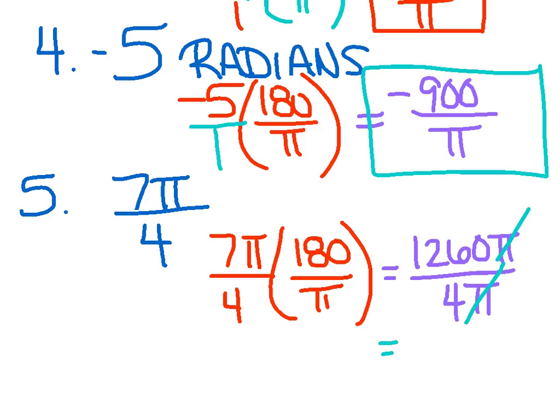And 1260 divided by 4. I'm going to cheat. I think that gets me 315 degrees. Oops, I should say that's degrees as well.